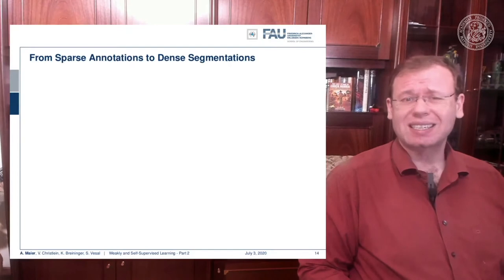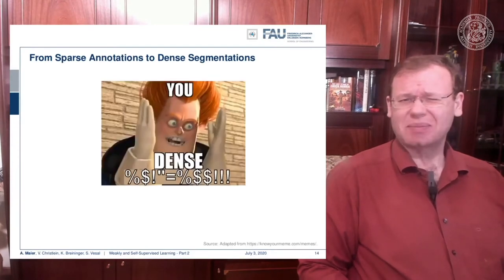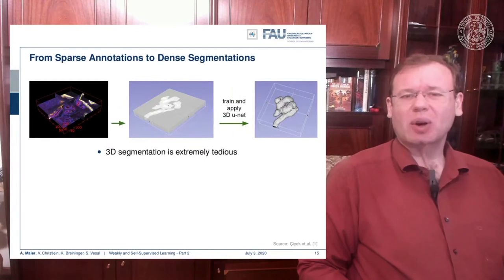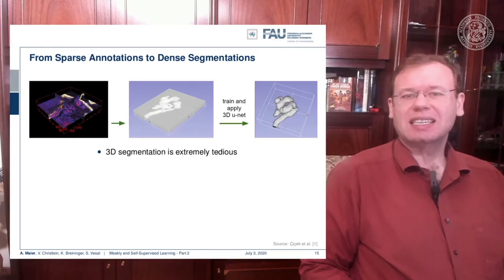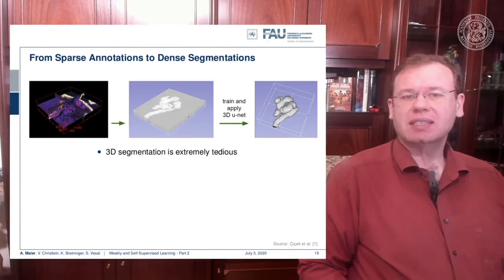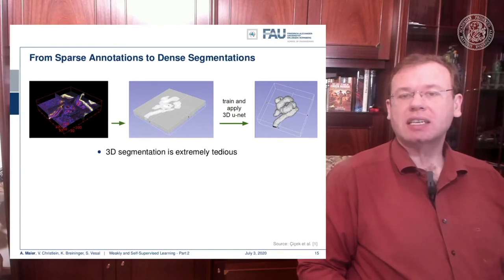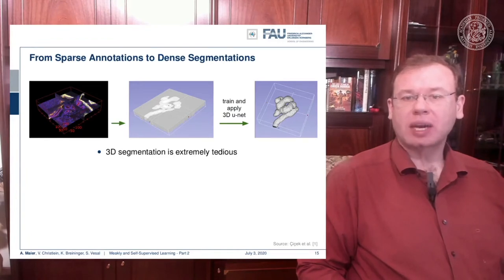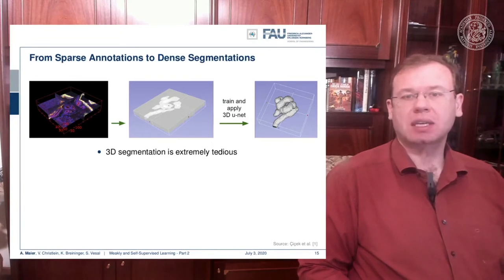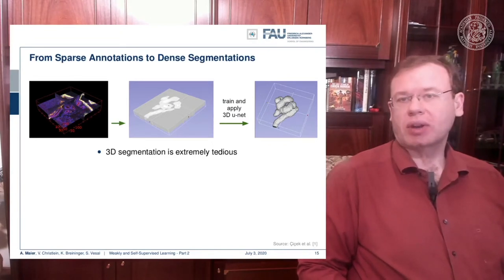So what does dense mean? What we are actually interested in is a dense 3D segmentation. Here you have an example of a volumetric image, and you can see that we have a couple of slices that we visualize on the left-hand side. We can annotate each of these slices and then apply them for training — for example, a 3D UNet — to produce a full 3D segmentation.